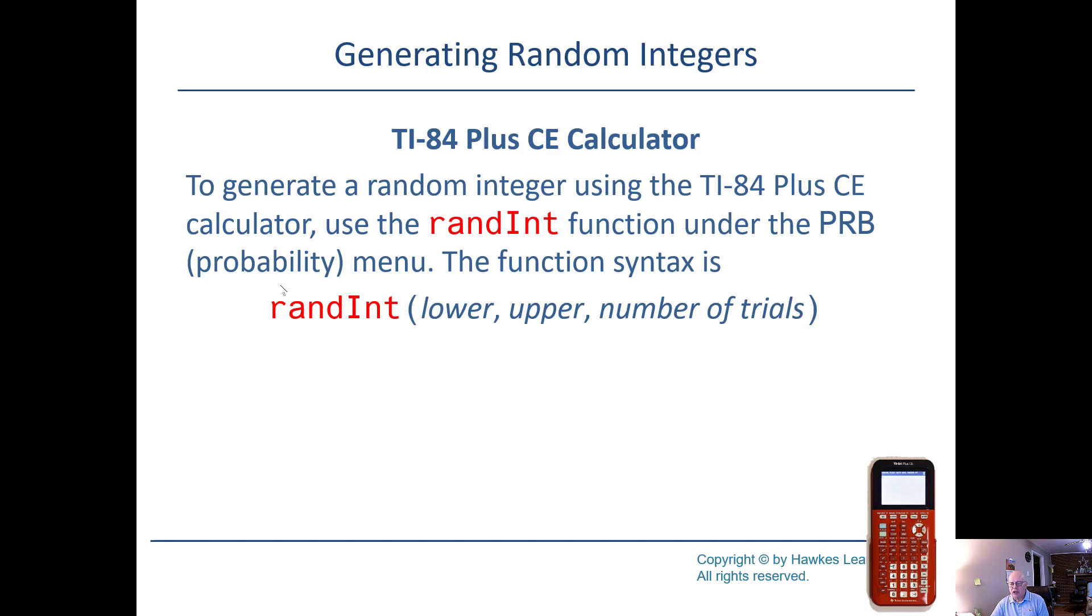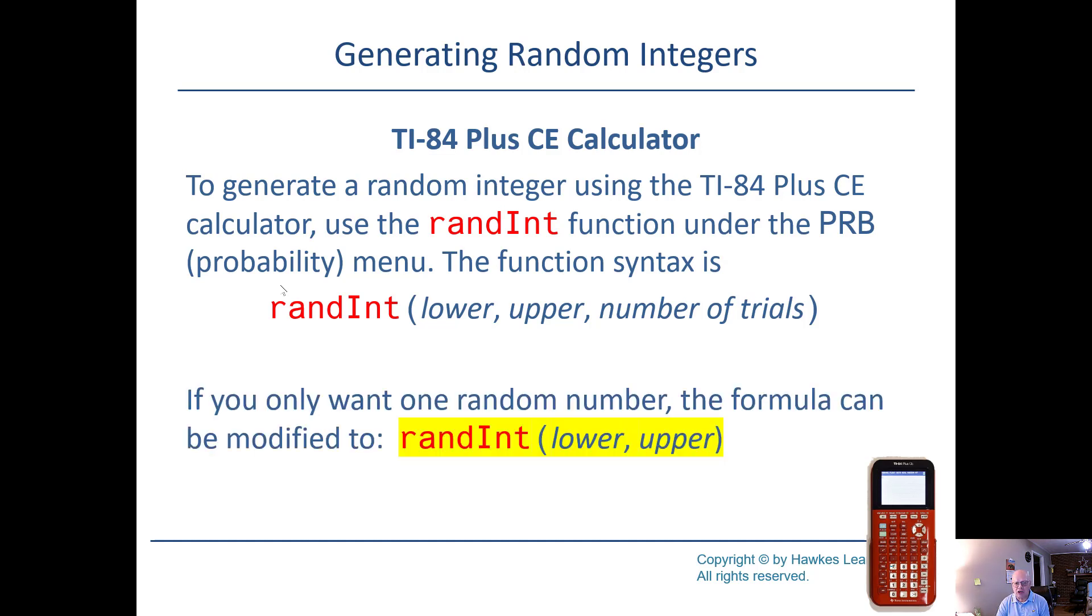And you need two or three parameters. That's the numbers you tell the calculator. First of all, you tell the calculator which integer is the lowest one you want it to use. Then you tell which is the largest number you want it to use, the integer that is. And then, if you want to do more than one number, get more than one number, how many of those do you actually want? So here's how you do it. By the way, you can leave out the last one if you only want one. You don't need to put a one there if it's only one.